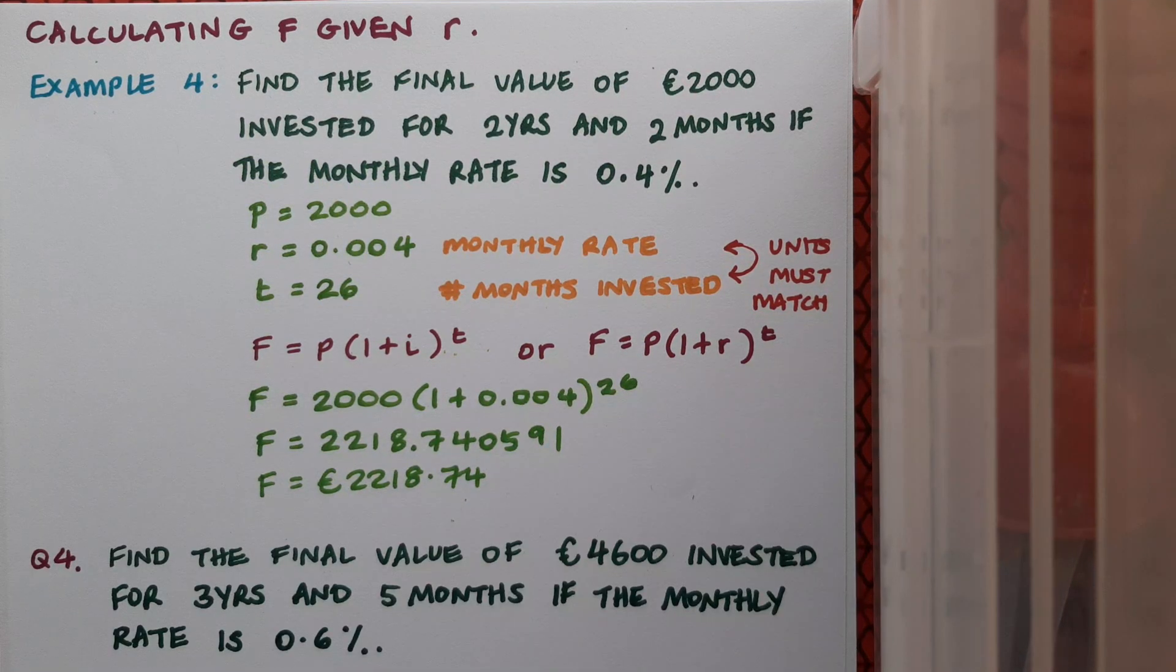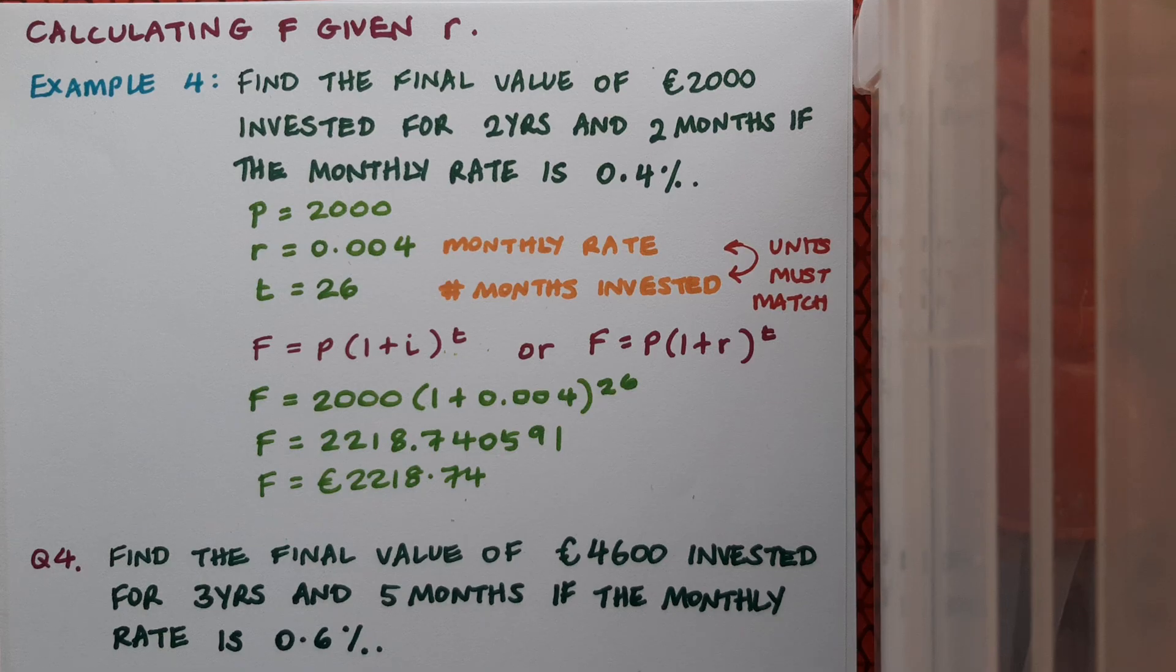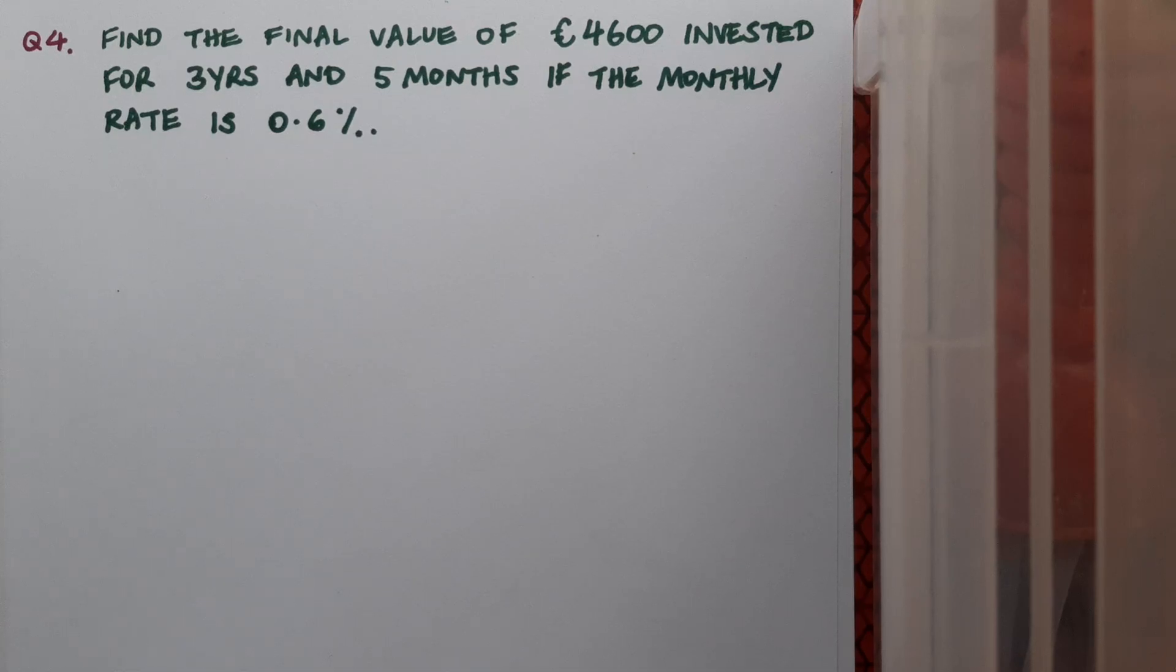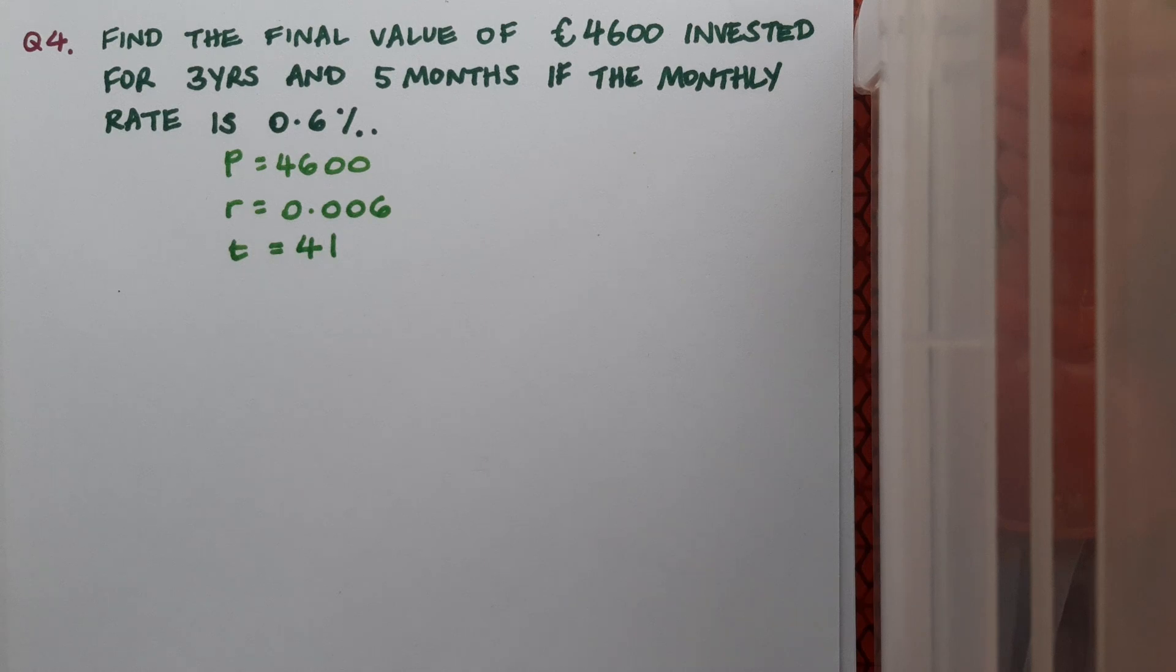So here's a question now for you to do. Find the final value of €4600 invested for three years and five months if the monthly rate is 0.6%. Pause the video while you do this and then play and check if you're correct.